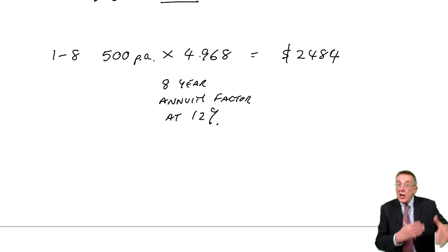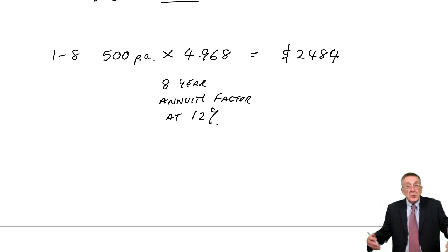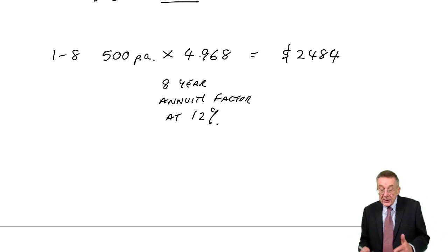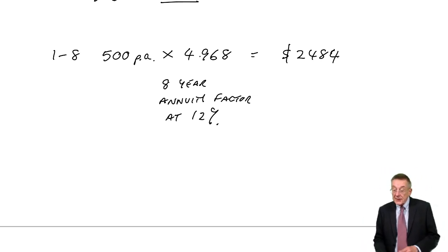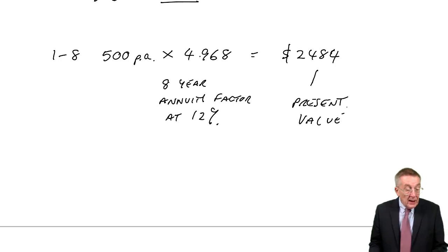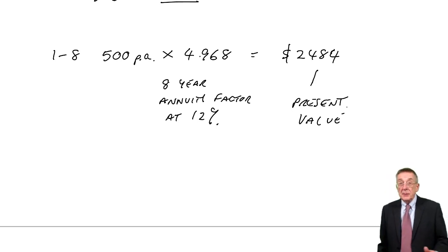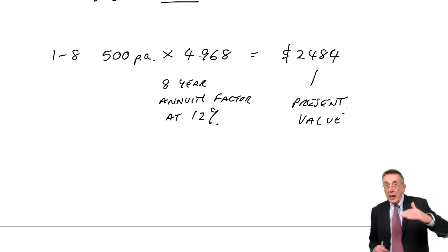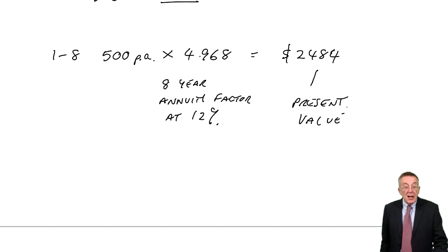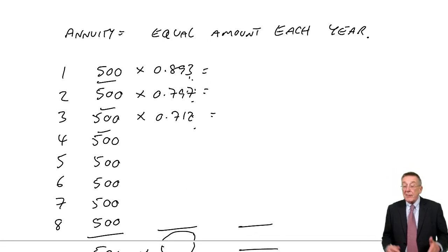Receiving 500 each year for eight years would be equivalent to getting 2,484 now. 2,484 now could be earning interest; 500 a year is a total of 4,000 over eight years, but that includes all the interest. Putting 2,484 in the bank now and adding on interest would effectively get you 500 a year for eight years — that is the present value. Be careful in the exam: the present value table is used when discounting one single amount, while the annuity table is used when receiving an equal amount each year for several years.